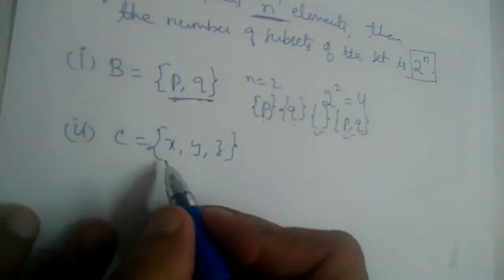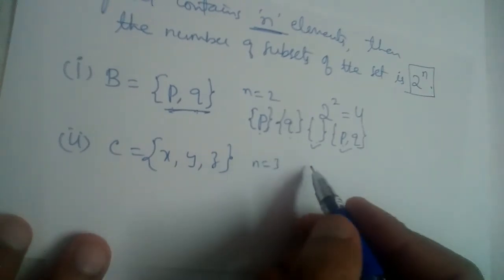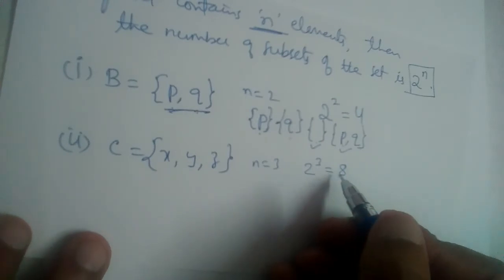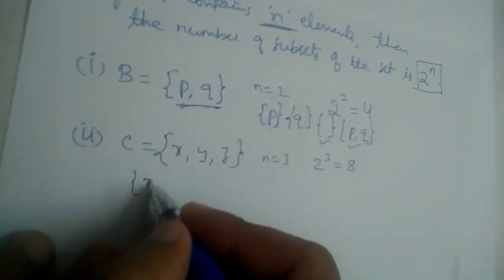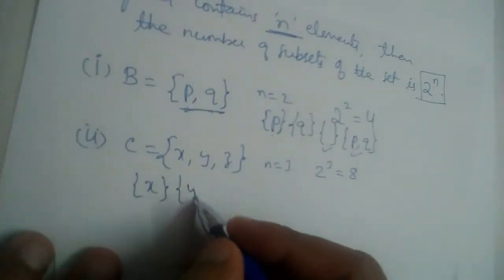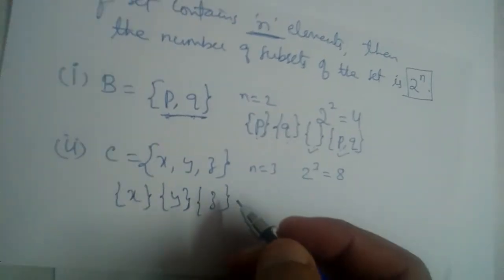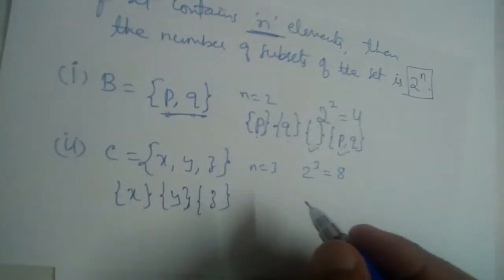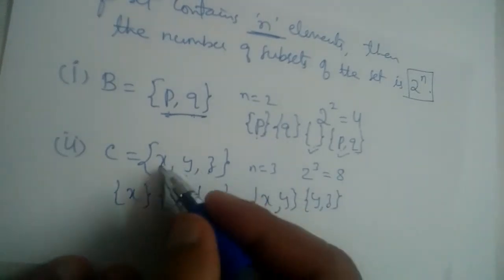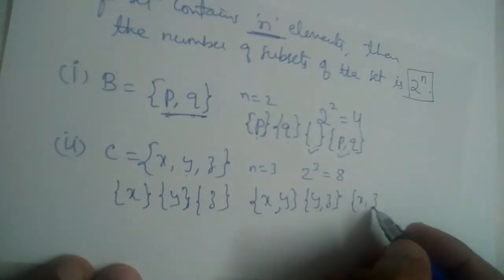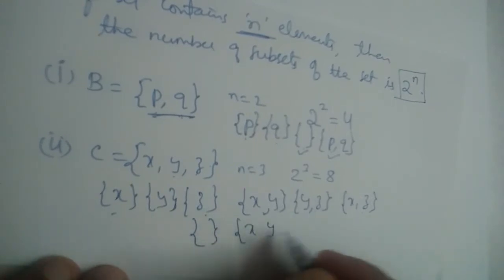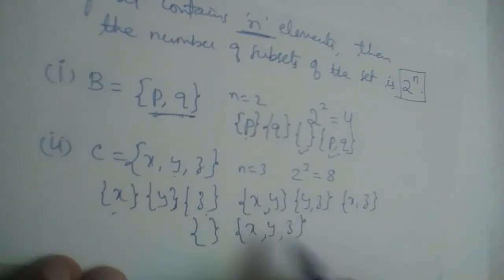Now for the next example, n is equal to 3. That means we will have 2 cubed subsets, which is 8 subsets. Let us write those subsets. We have {x}, {y}, {z}, then {x, y}, {y, z}, and {x, z}. And also the empty set and the set itself — total 8 subsets.